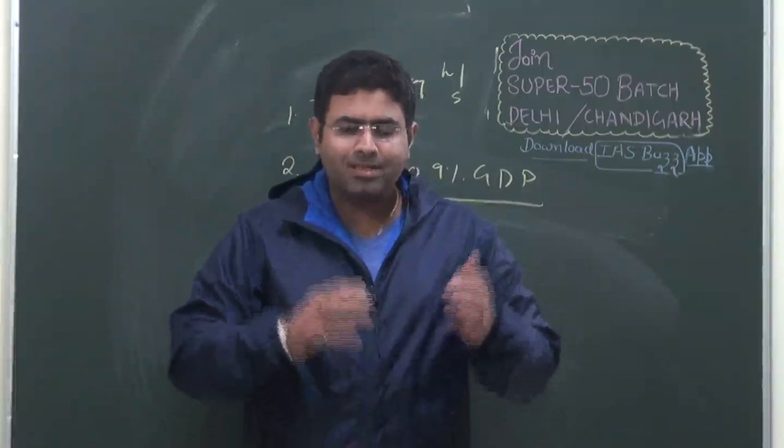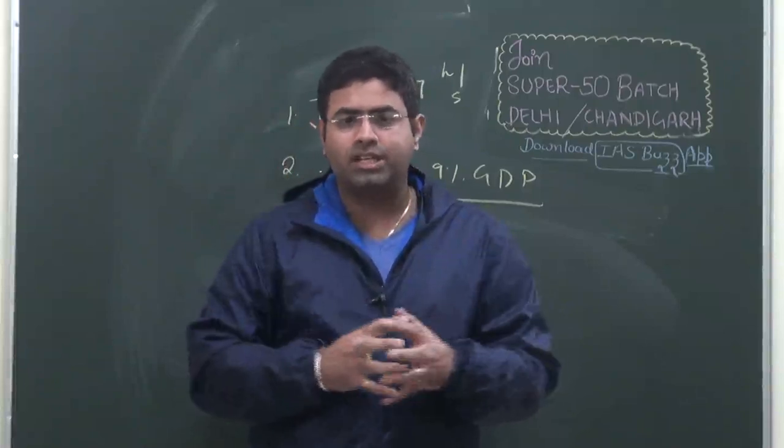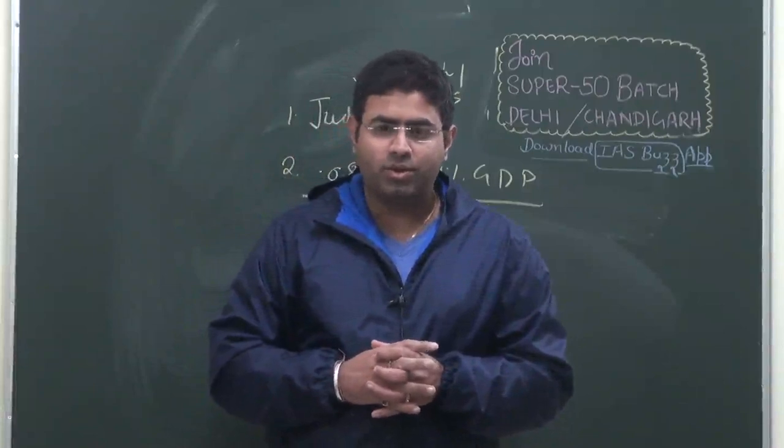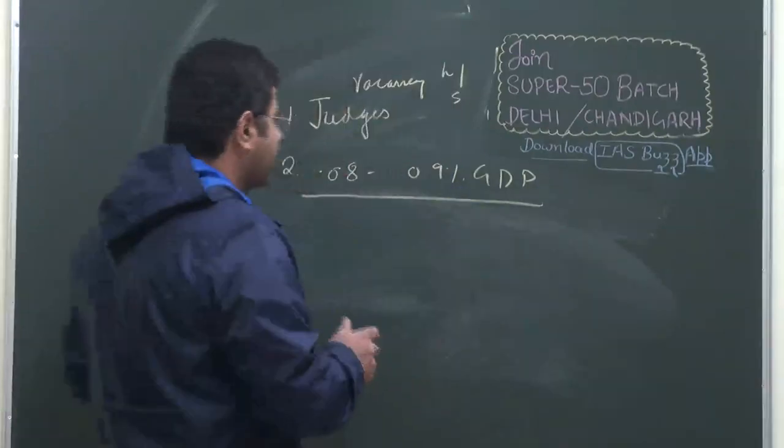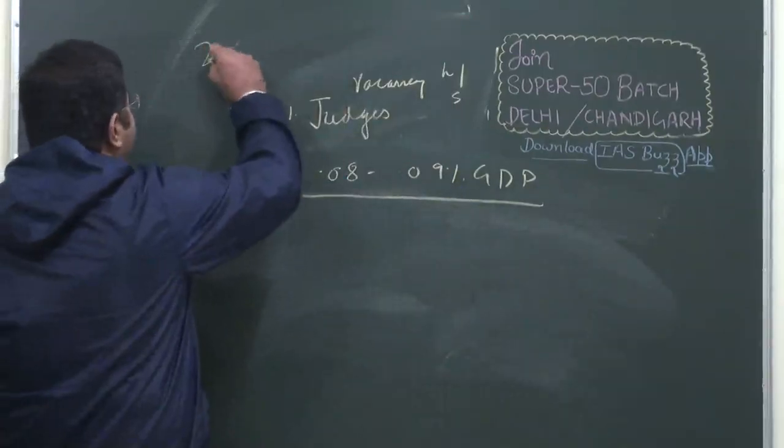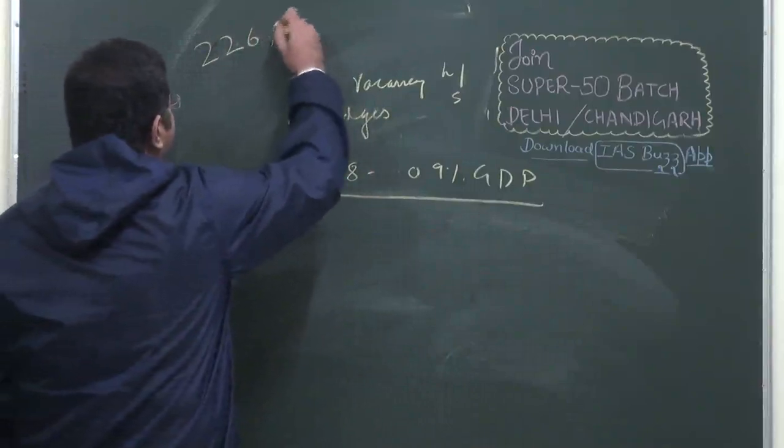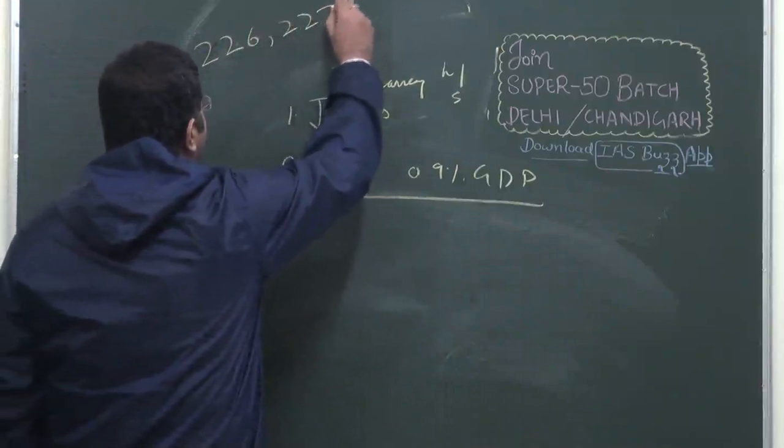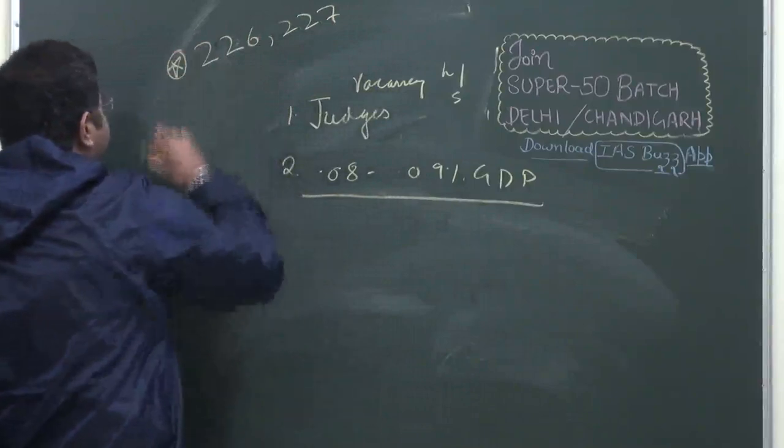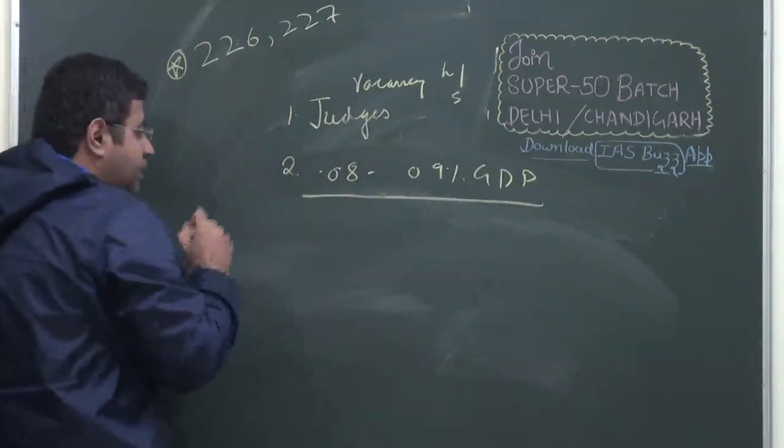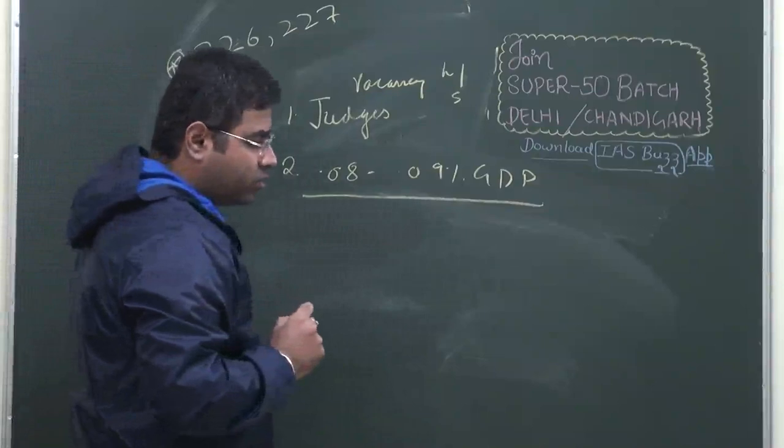Now there are certain structural lacunas in the Indian judiciary. What are these structural lacunas? The first structural lacuna is with respect to the high courts. The high courts, under Article 226 and Article 227 of the Constitution, have a defined writ jurisdiction.